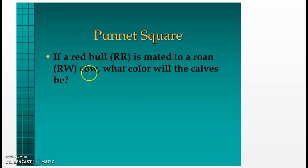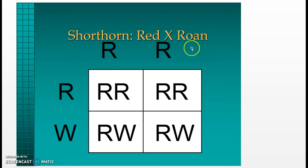If a red bull (RR) is mated to a roan cow (RW), with RR across the top and RW across the side in the Punnett square, you will have 50% red offspring and 50% roan offspring.